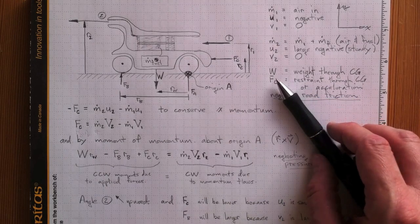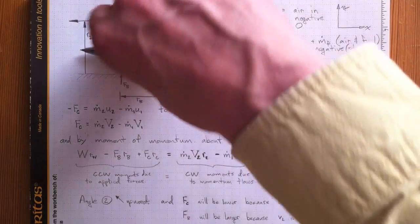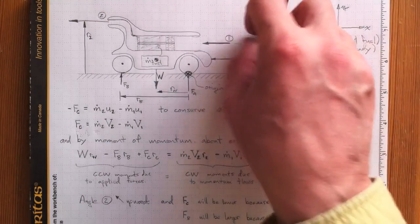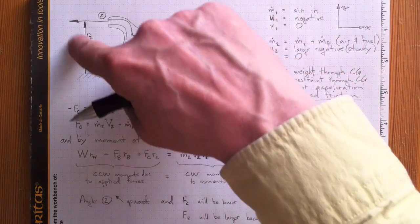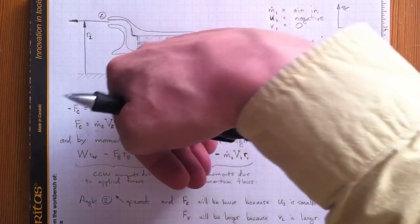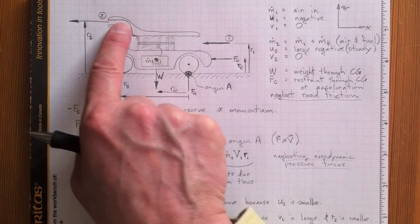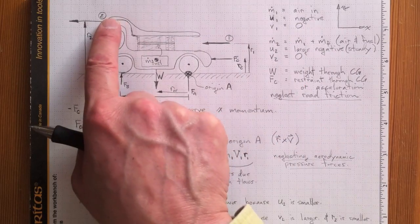Now if W is equal to zero and we turn this thing on, then the whole car will do this and flip over its front wheels and smash. That would be bad, but fortunately the car has some weight, so there's some weight causing a moment in this direction to offset the push from this jet in that direction up here, way up high.